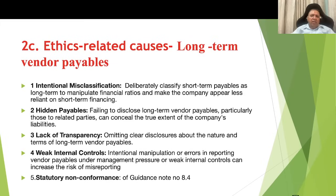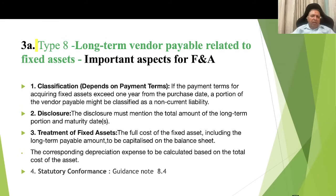Ethics-related causes for long-term vendor payables: number one, intentional misclassification — classifying short-term payables as long-term or vice versa to manipulate financial ratios; number two, hidden payables — failing to disclose long-term vendor payables, particularly those related to related parties, concealing the true extent of the company's liabilities; number three, lack of transparency; number four, weak internal controls — intentional manipulation or errors in reporting vendor payables under management pressure; and non-conformance as per guidance note 8.4.